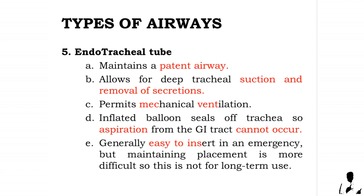The endotracheal tube maintains a patent airway, allows for deep tracheal suctioning and removal of secretions, and permits mechanical ventilation. The inflated balloon seals off the trachea so aspiration from the GI tract cannot occur. It is generally easy to insert in an emergency, but maintaining placement is more difficult, so it is not intended for long-term use.